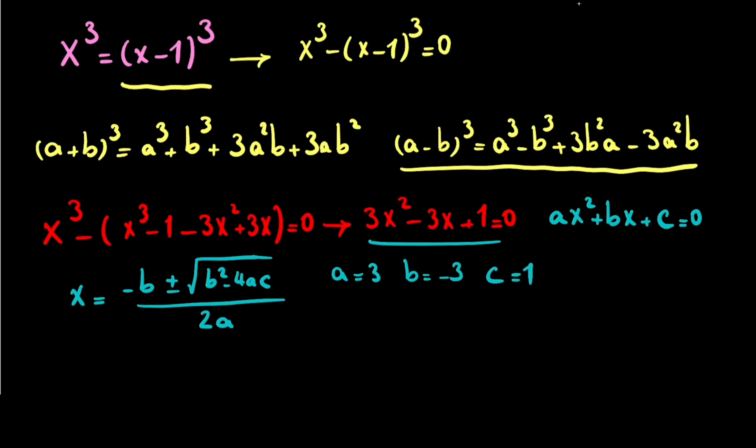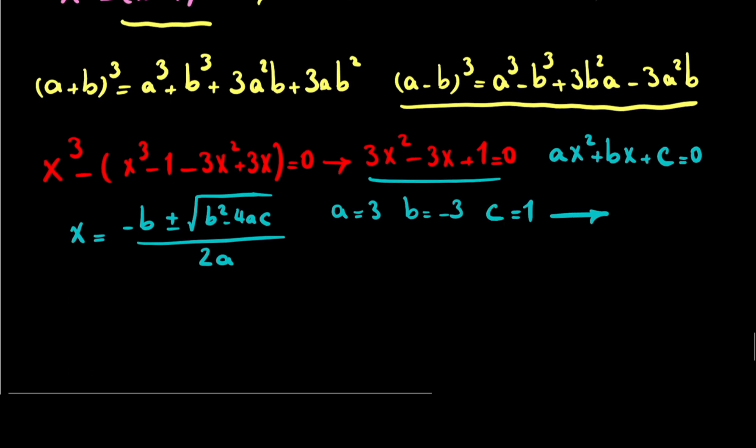So it means if I scroll down, I can write x as -(-3) = 3 ± √(b² - that's 9 - 4 × a that's 3 × c that's 1), divided by 2 × 3, that's 6.